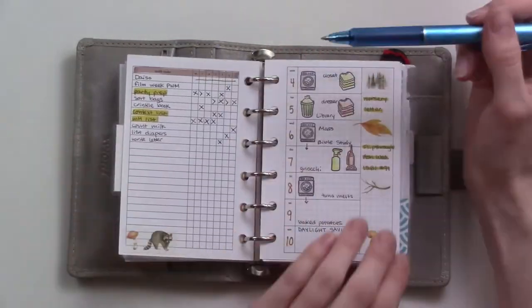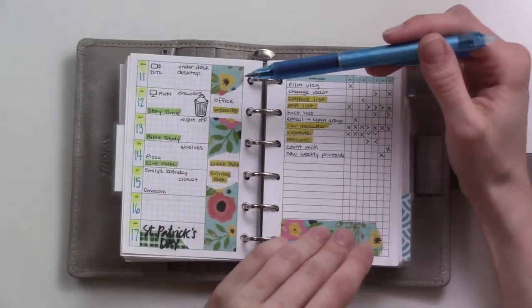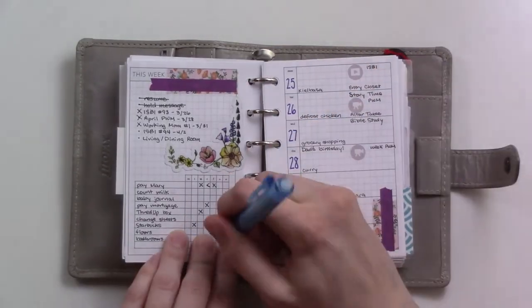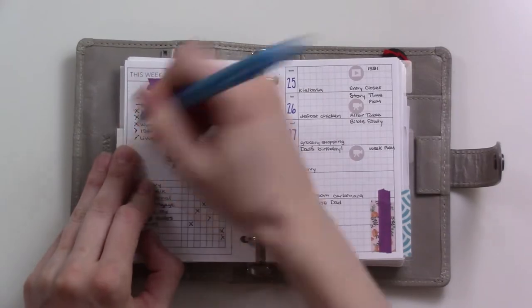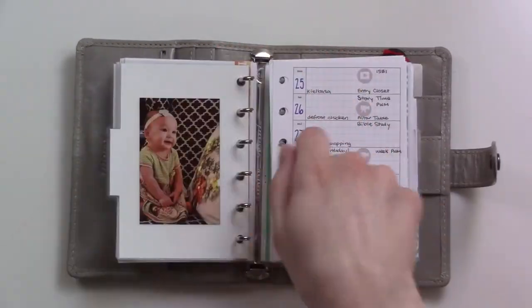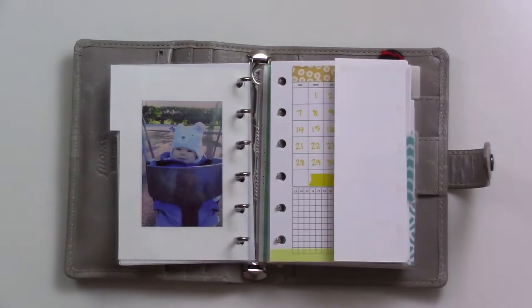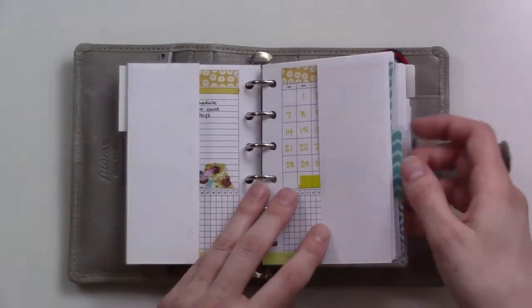I have been leaving the weekly pages in for the current month and just removing them at the end of each month. And so as we're going into April now, I'm just going through these weeklies from March and then removing those so that I'm lighter and freer and ready for the next month.